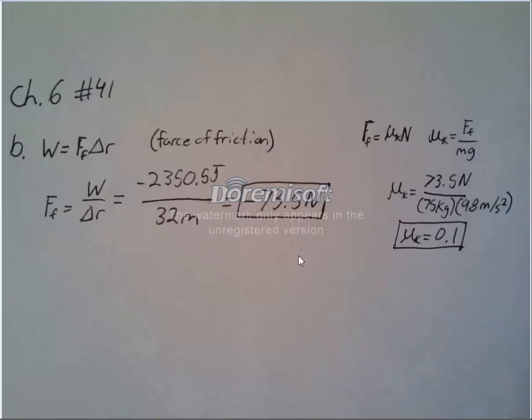For the second part of the problem, we use the equation W equals frictional force delta R. So, we've rearranged that equation. We've got the work done by the friction, and then we've got the delta R, 32 meters. Solve for that, we get negative 73.5 newtons.